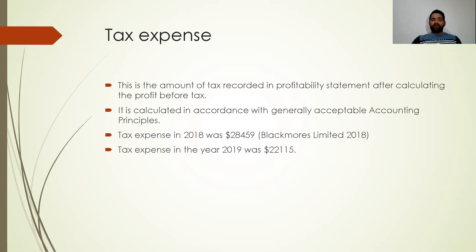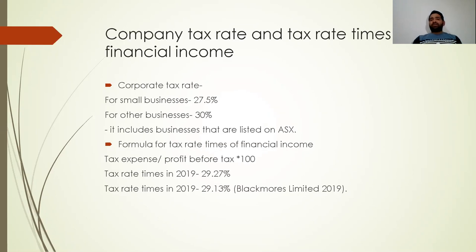In this scenario, generally accepted accounting principles include Australian accounting standards and the framework of accounting in the Corporations Act 2001. The next slide is the company tax rate and tax on financial income. The difference in tax amounts arises due to different methods of calculation. A company is required to pay around 30 percent on the income calculated by the ATO. Tax expenses are recorded in accordance with generally accepted accounting principles, and the difference in these amounts is the primary reason for the emergence of deferred taxation.